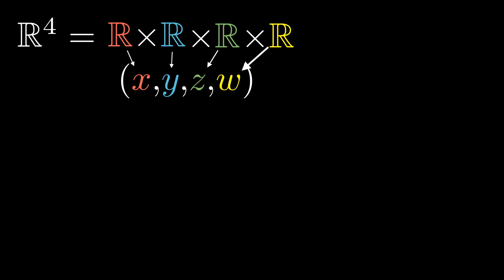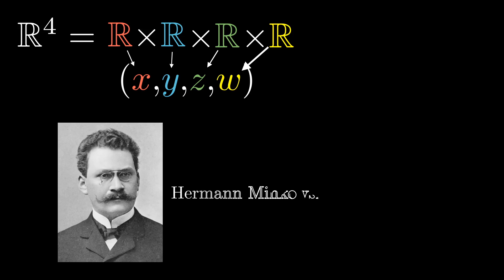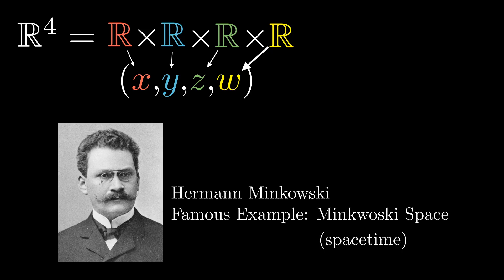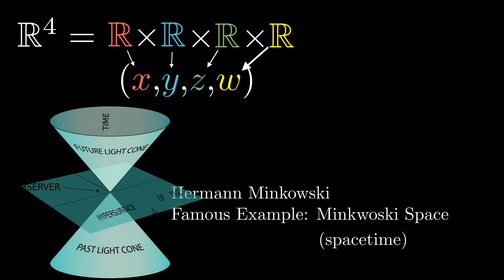If we had a fourth coordinate, then we've got a typical element of R4. Probably the most famous example of four-dimensional space is Minkowski space, which is the setting for special and general relativity.